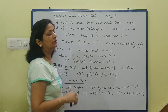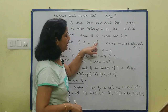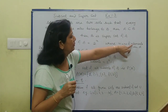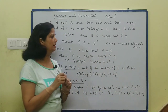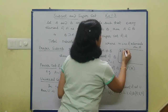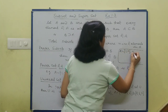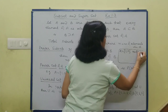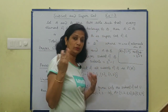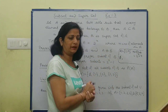Total subsets of A — total कितने subsets होंगे A के? 2 to the power N, जबकि N represent करता है number of elements in A. For example, एक set A है हमारे पास जिसमें elements हैं 1 और 2 — कितने subsets होंगे? Number of subsets = 2 to the power 2, यानि 4.